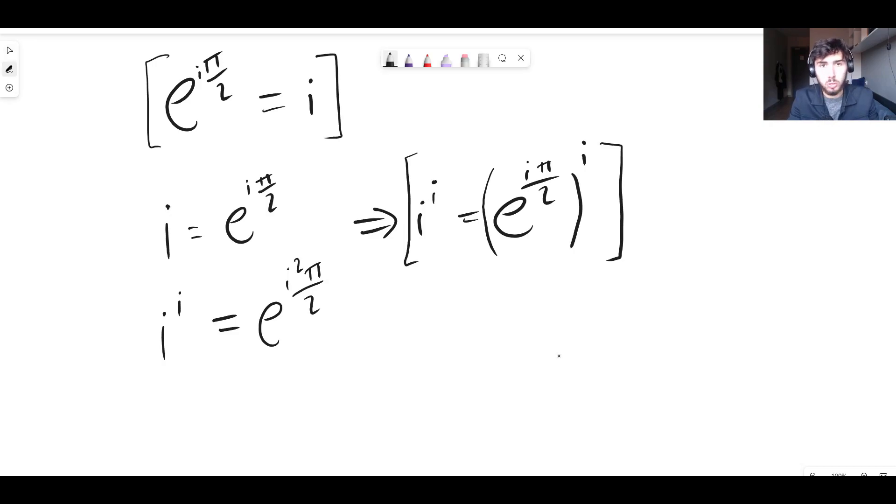So we're multiplying this value, i pi on two, and this i. We're multiplying them together. And we get i pi on two times i. That's i times i times pi on two, which is i squared times pi on two. Hope that step makes sense to you guys.